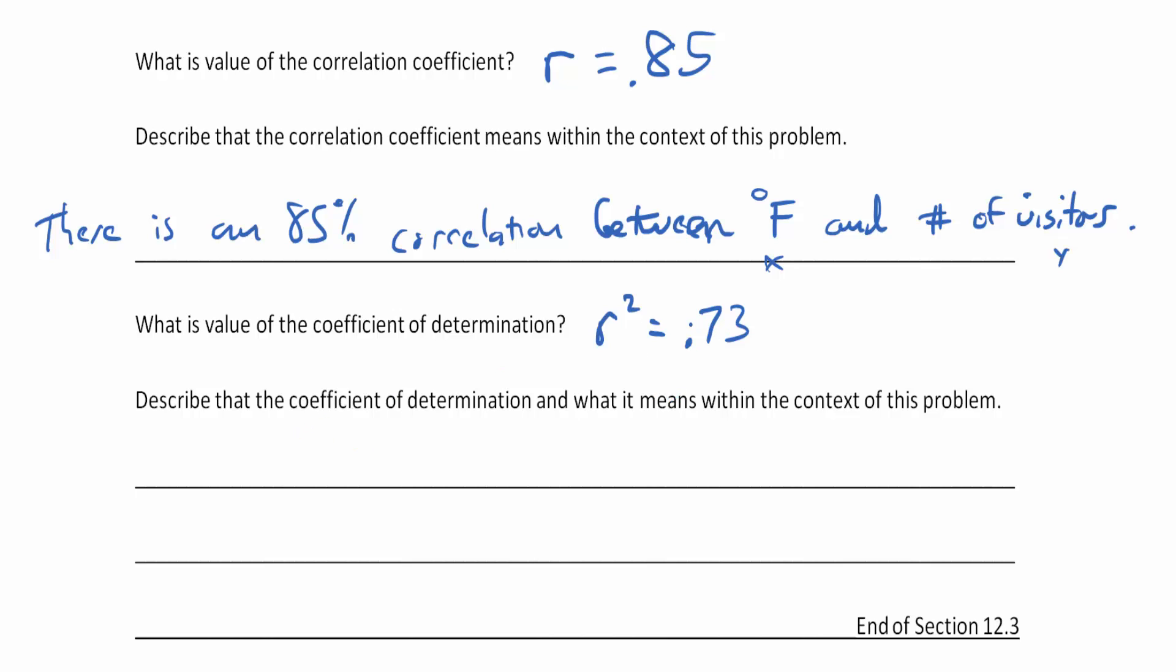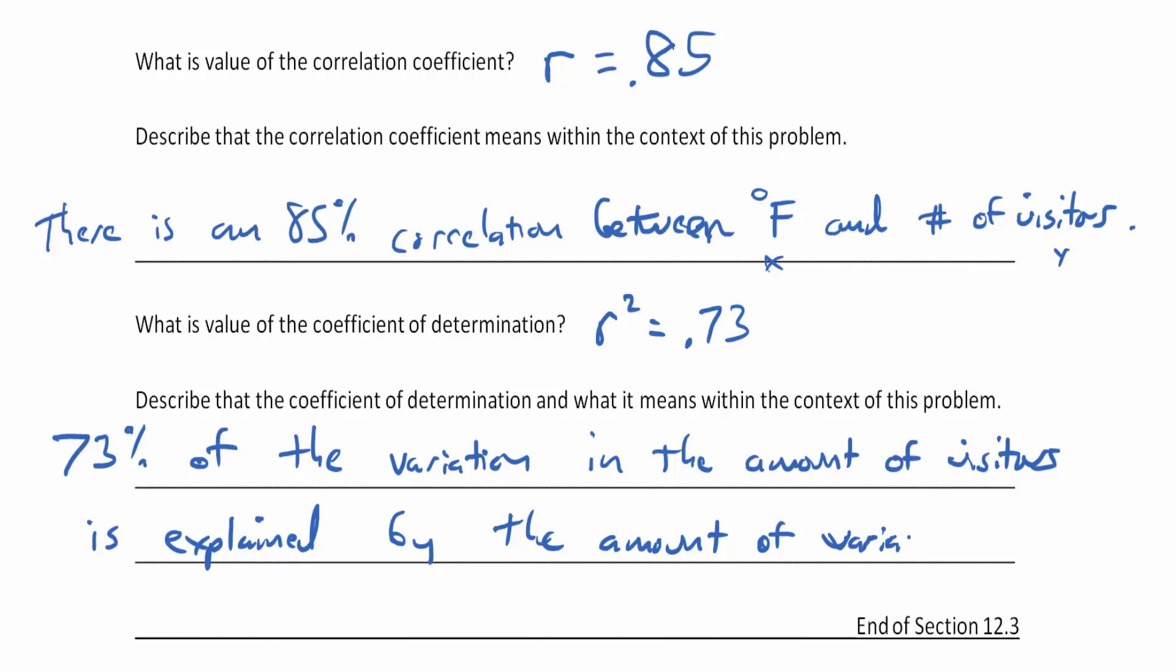So 73 percent of the y—now in this case the y is going to be the amount of visitors—so 73 percent of the variation in the y is explained by the amount of variation in the x. The x in this case would be the temperature or degrees Fahrenheit.